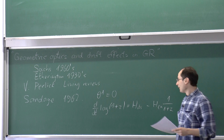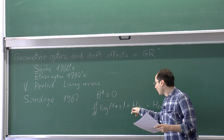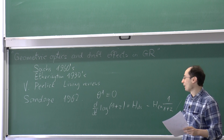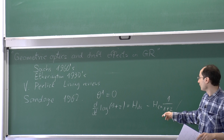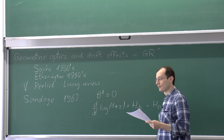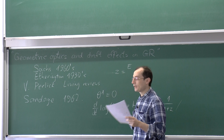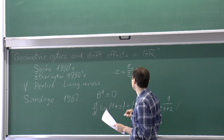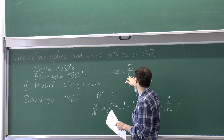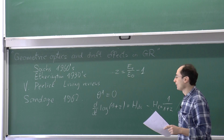There is a drift of the redshift which depends on the Hubble parameter at the observation time but also at the emission time. This quantity allows us to probe the expansion history. The redshift z is basically the energy of a photon as emitted divided by the energy as observed, minus 1 — a standard quantity in astronomy.